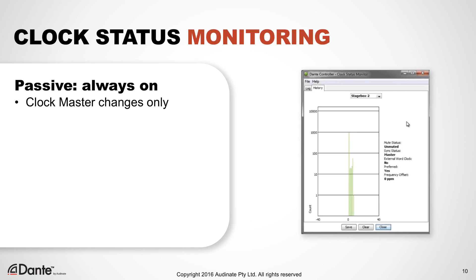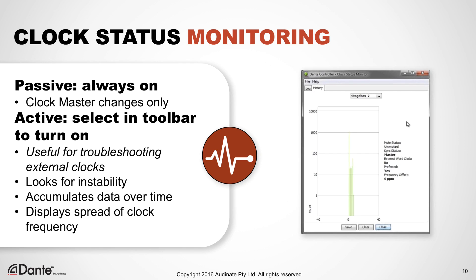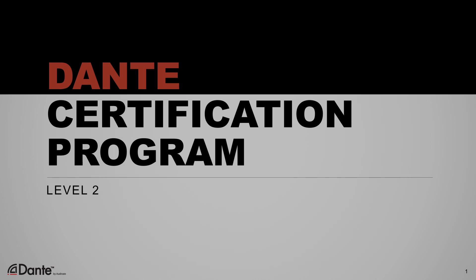Dante Controller supports two types of clock monitoring: passive and active. Passive monitoring is on all the time and provides alerts when a clock master changes on the network. Active clock monitoring is turned on by selecting it in the Dante Controller menu bar; it checks whether the clock master is exhibiting any signs of instability, which is important when using an external clock such as that in a mixing console. The active monitoring indicator will turn yellow if there is trouble — click the indicator to open a window displaying clock behaviors over time.